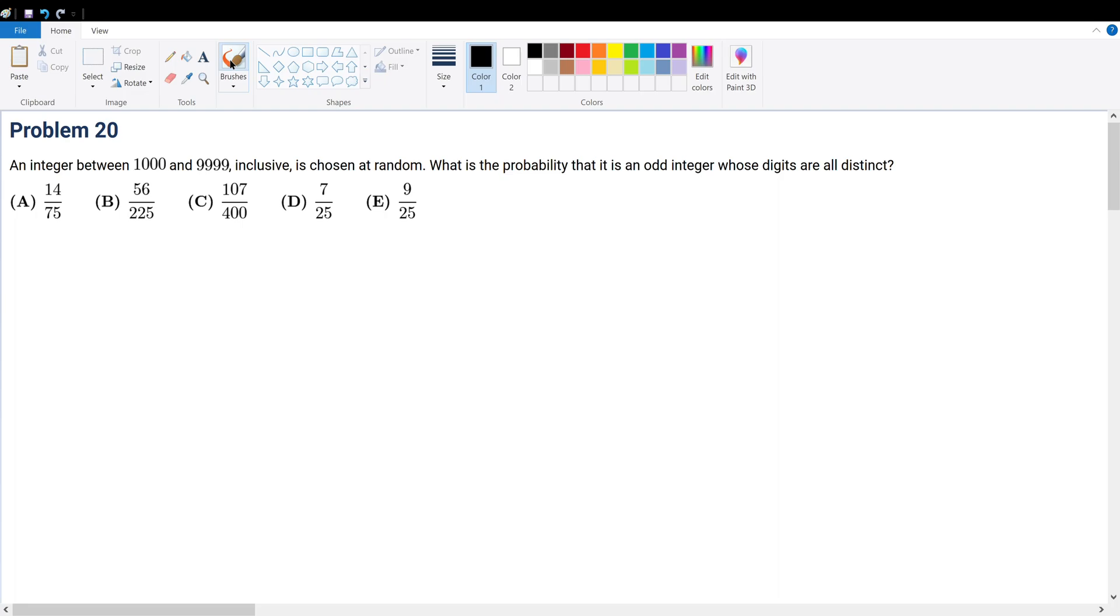Problem 20. An integer between 1,000 and 9,989 inclusive is chosen at random. What is the probability that it is an odd integer whose digits are all distinct?